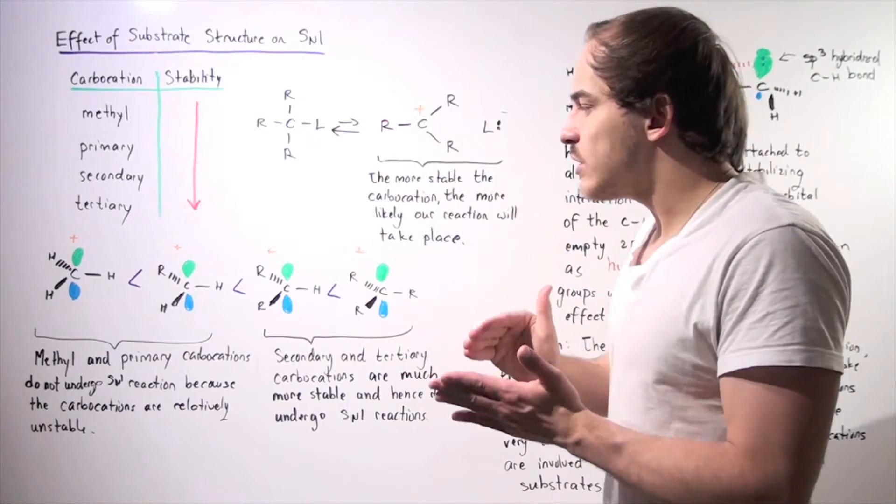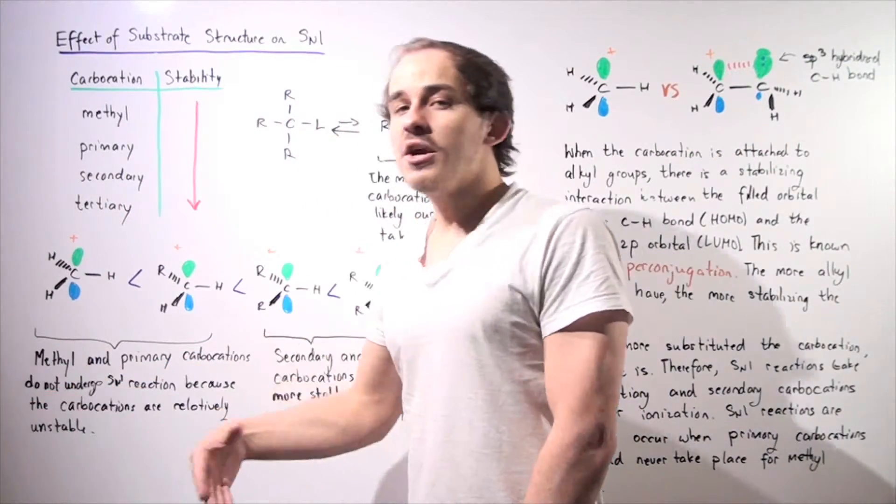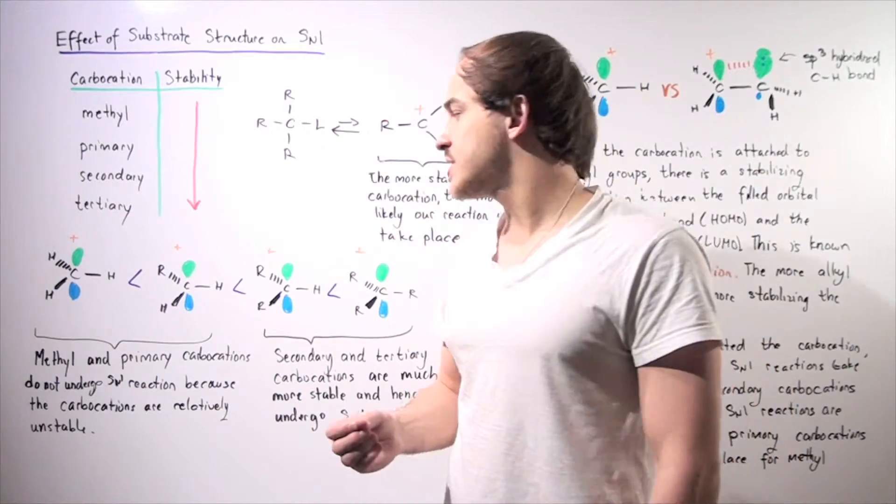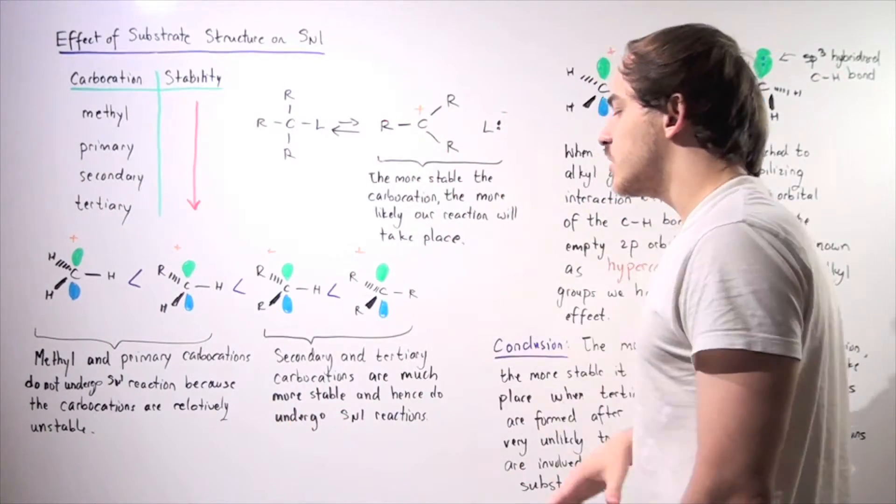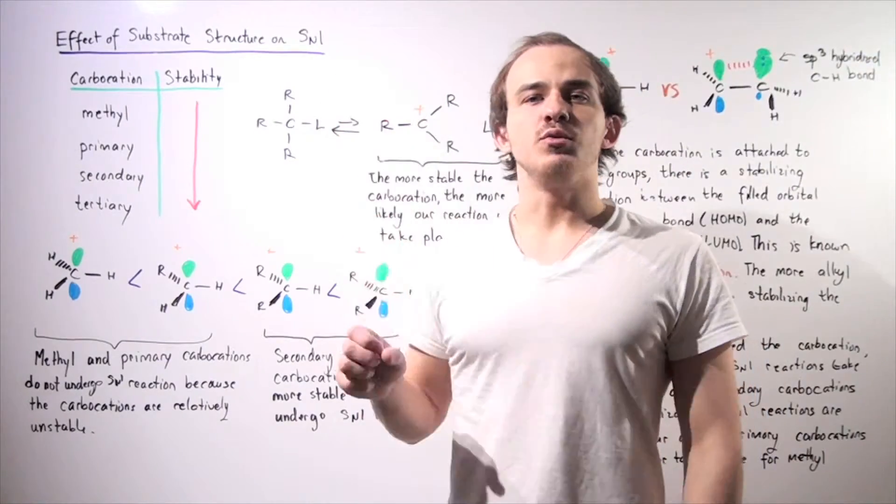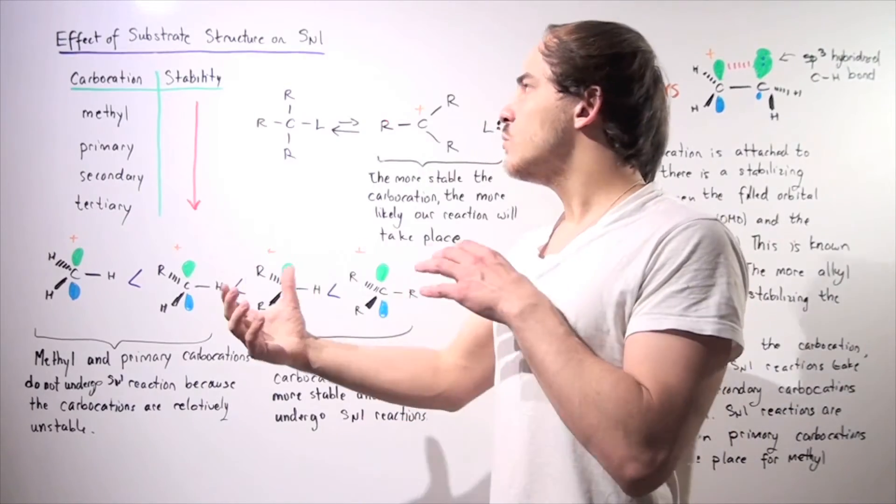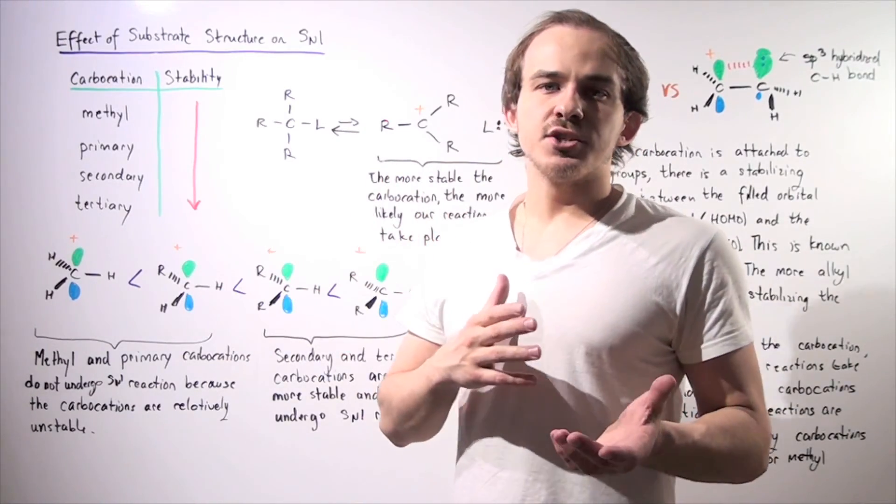So whenever we deal with primary or methyl carbocations, we usually have SN2 reactions taking place. Whenever we're dealing with secondary and tertiary, we usually deal with SN1 reactions. And we'll talk more about that in a future lecture when we compare SN1 and SN2 reactions.